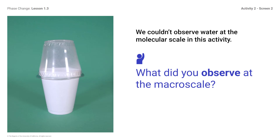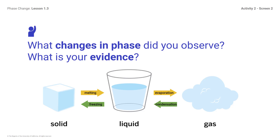We couldn't observe water at the molecular scale in this activity. What did you observe at the macroscale? You might respond: droplets of liquid water or mist appeared on the clear cup. Even with the hand lenses, the water molecules are too small to see. We will think more about the molecular scale later in this lesson. What changes in phase did you observe and what is your evidence? You might respond: evaporation — liquid to a gas — or condensation — gas to a liquid.